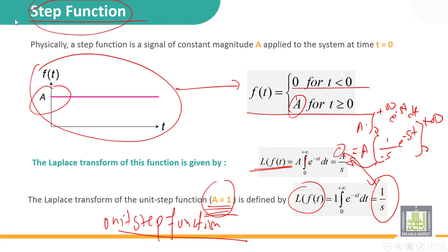For the step function, it's a constant step, but the magnitude A can be other than one: two, three, five, ten. But if the magnitude becomes one, we call it unit step function.